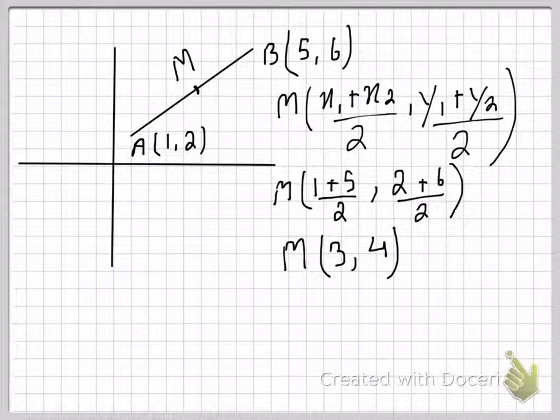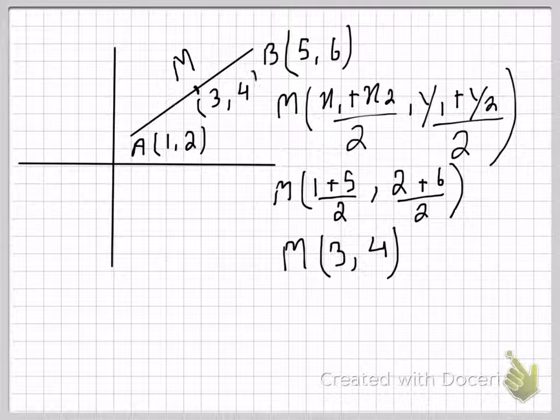So the y coordinate of the midpoint is 4. So that means, and remember, midpoint is always represented with the capital letter M. So M right here has coordinates 3, 4. That's it.